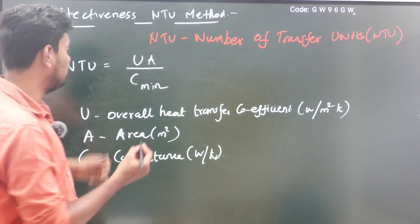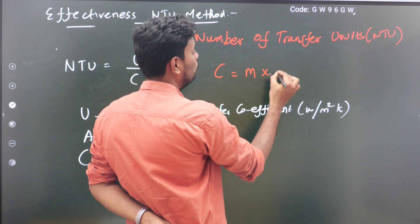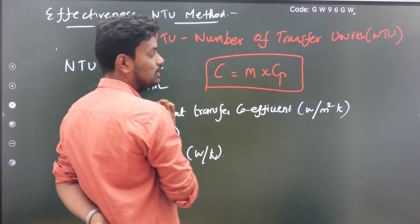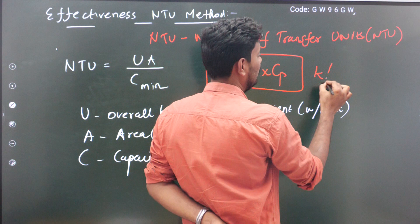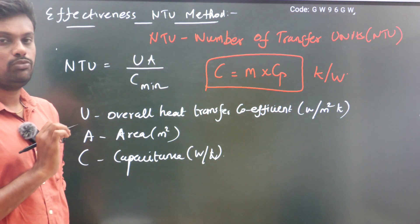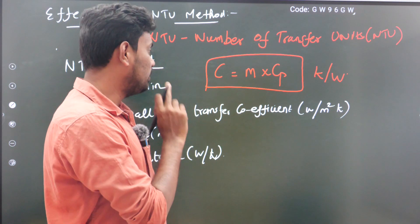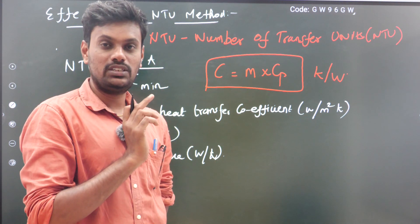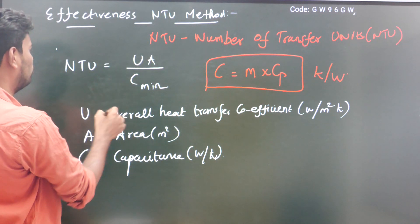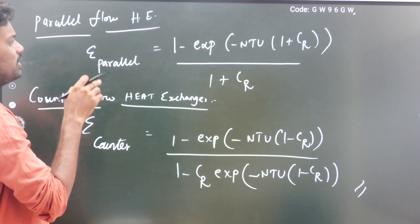The formula for capacitance C equals mass of the fluid multiplied by specific heat of the fluid: C = m × Cp. The unit is watts per kelvin. So you multiply the mass and specific heat to get the capacitance value.